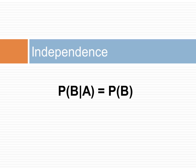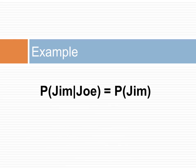Two events are independent if knowing one provides no useful information about the other. Conditional probability shows the probability of event B given that A has occurred. If A does not add any information to our estimate of the probability of B, then the conditional probability of B is the same as the probability of B. For example, if we think that the diabetes of Joe is not related to Jim's, we show this as the probability of Jim's diabetes being the same whether or not we know that Joe is also diabetic.